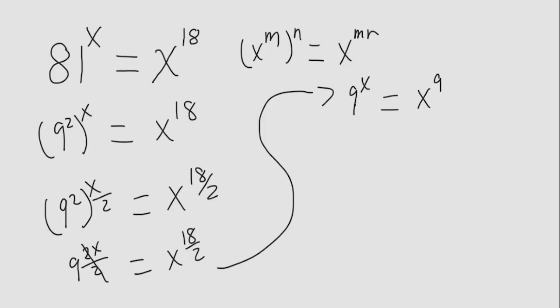So now we have a 9 in the base and a 9 in the exponent, x in the base and x in the exponent. So if we plug in the 9 in both places, they are equivalent. So x is equal to 9.